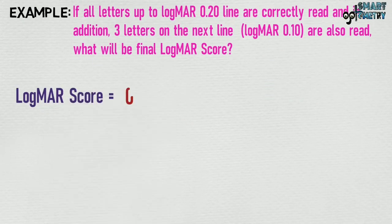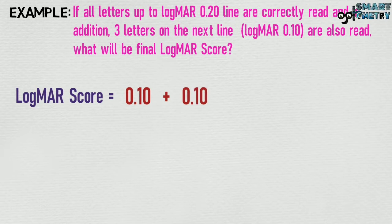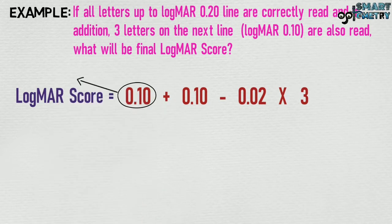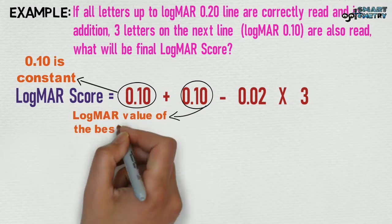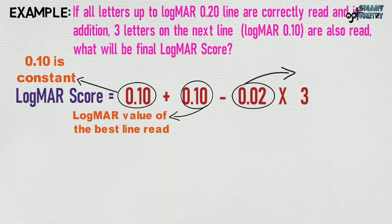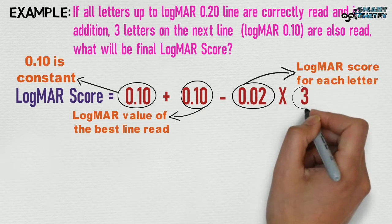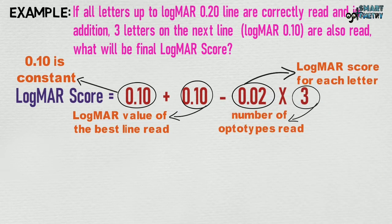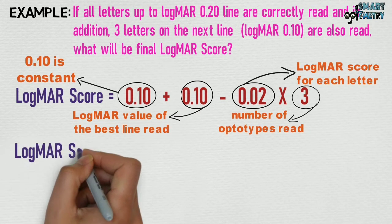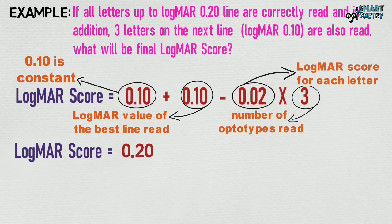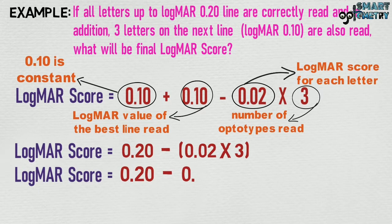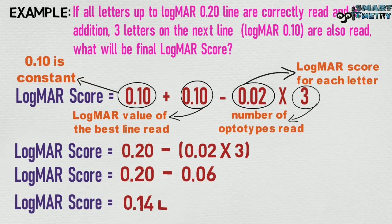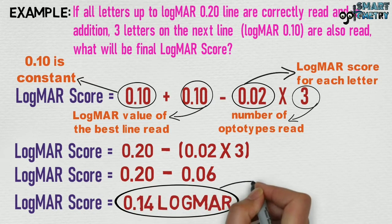Therefore, logMAR score equals 0.10 plus 0.10 minus 0.02 multiplied by 3. Here, 0.10 is the constant, the second 0.10 is the logMAR value of the best line read, 0.02 is the logMAR score for each letter, and 3 is the number of optotypes read. The logMAR score equals 0.20 minus 0.06, which equals 0.14 logMAR. This is the final logMAR score.